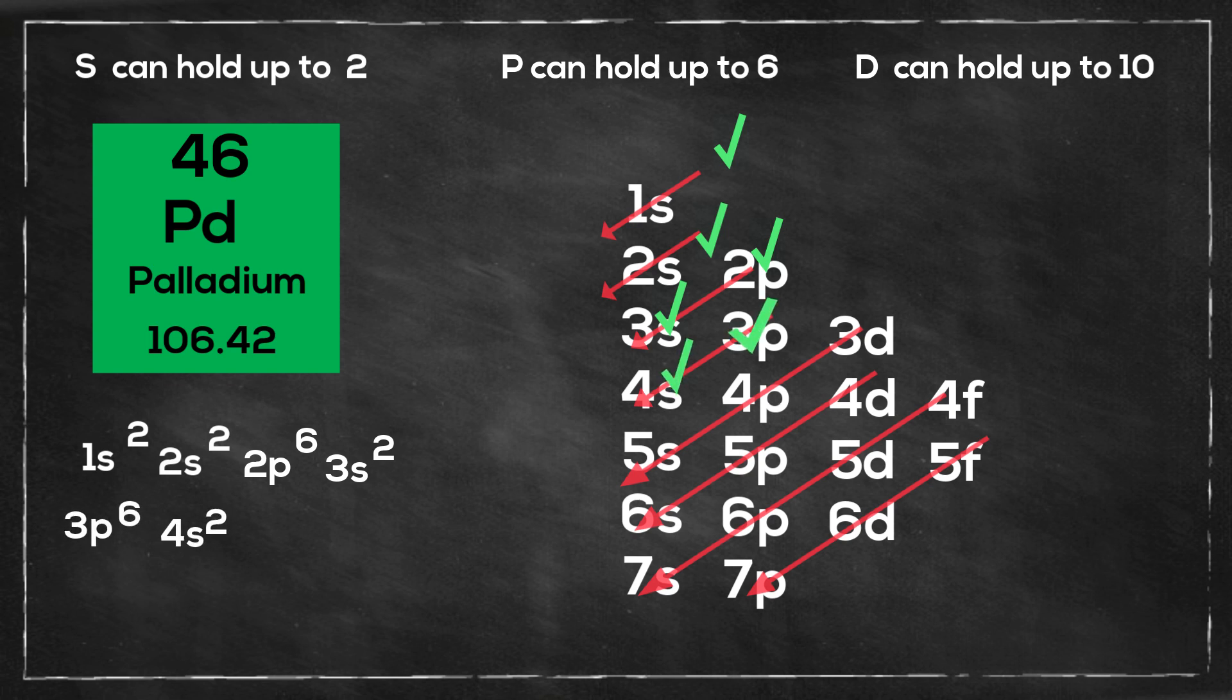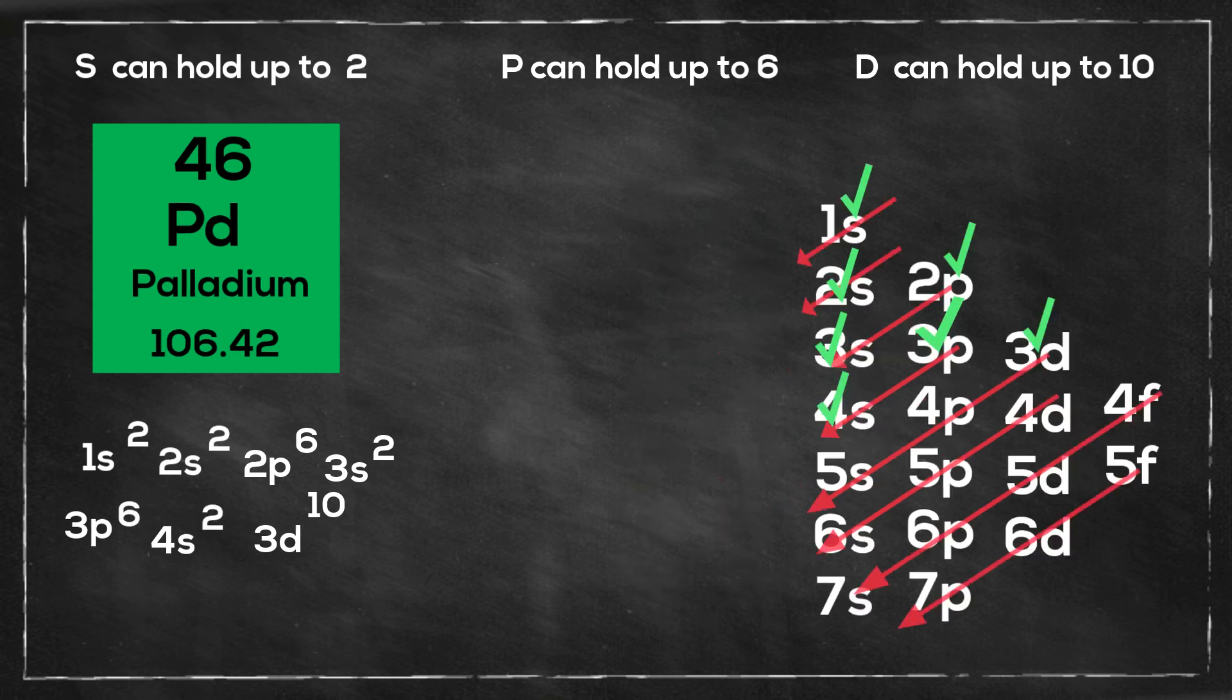Then 3d. That gives me up to 30 electrons. Then it is 3d10, then we have 4p6, and normally you would go 5s2, 4d8.